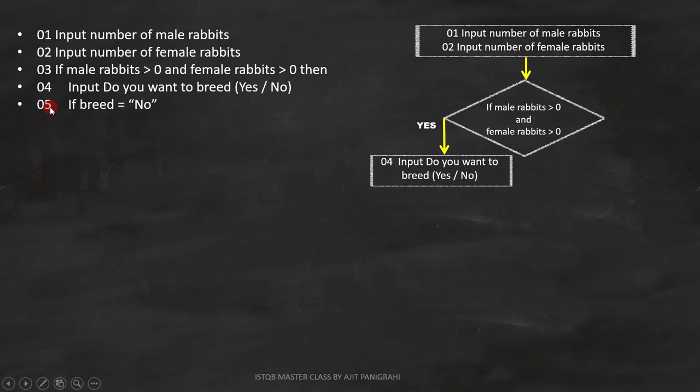Fifth line is, if breed equals to no. This is a condition, but the question is where to place it. This is how we have to place it in the flowchart.